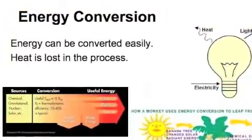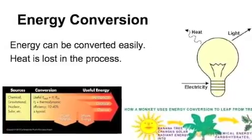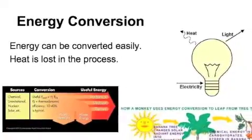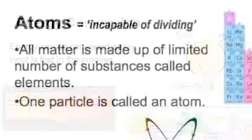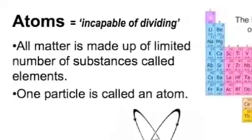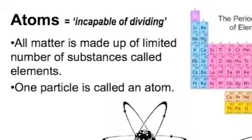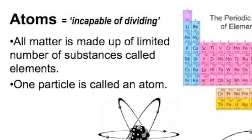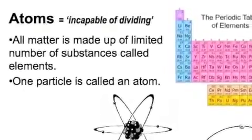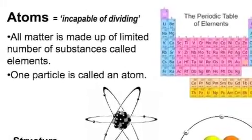Energy conversion is easy. The only problem is we will lose heat in the process. Let's dive right into atoms which means incapable of dividing. So for us that's the smallest stuff we're going to look at. All matter is made up of a limited number of substances called elements and one particle of an element is called an atom.